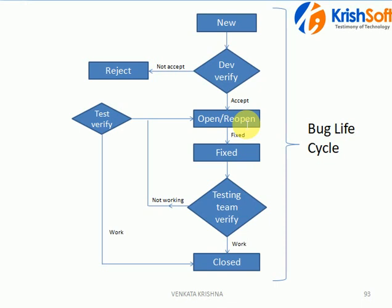Sometimes closed bugs can be reopened. For example, in Sprint 1 a bug is fixed; in Sprint 2 you test the same functionality and it works fine, so you close the defect. But in Sprint 3, if you test the same functionality and the same bug appears again, you should not raise a new bug — instead, you reopen the existing closed bug.